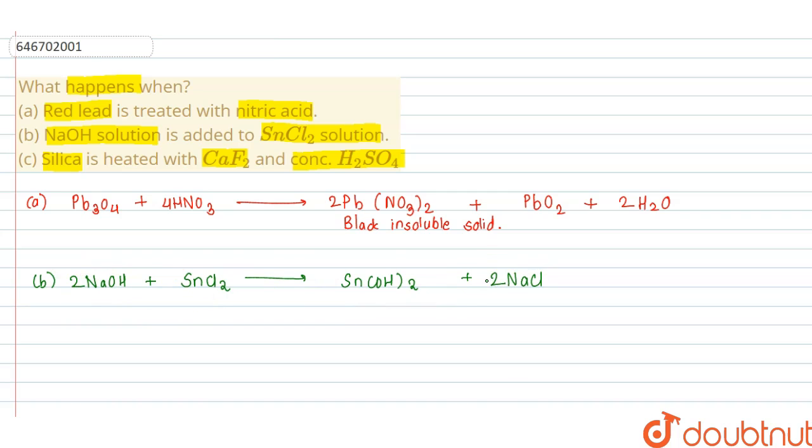Now this is the balanced reaction. Again, this stannous hydroxide reacts with sodium hydroxide NaOH giving sodium stannite Na2SnO2 with water. This is the balanced reaction.